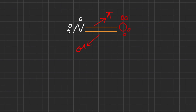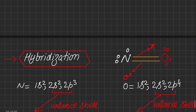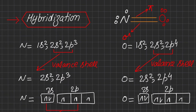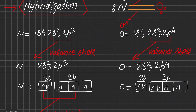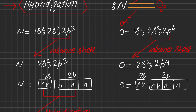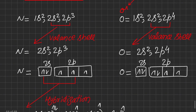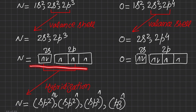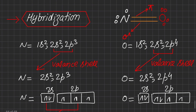We have discussed the bonding situation in terms of how many electron pairs are on separate atoms and how many bonds are present. Now we will see what type of hybridization exists, particularly on nitrogen. Again, this is the bonding situation discussed, and the complete configuration of nitrogen is 2s² 2p³ as valence electronic configuration. For oxygen the valence electronic configuration is 2s² 2p⁴.